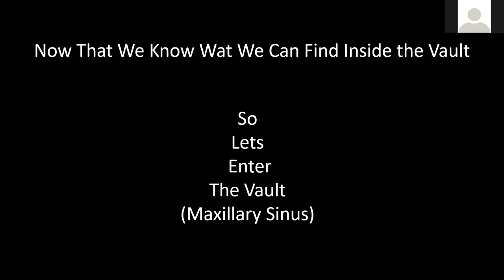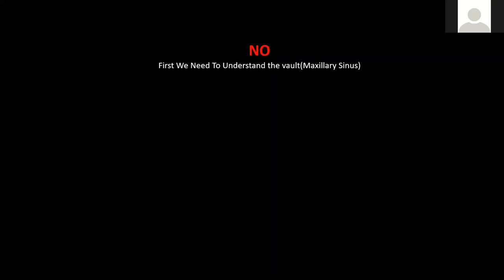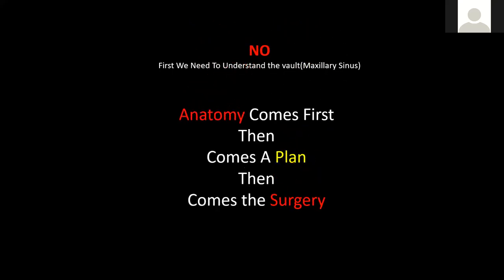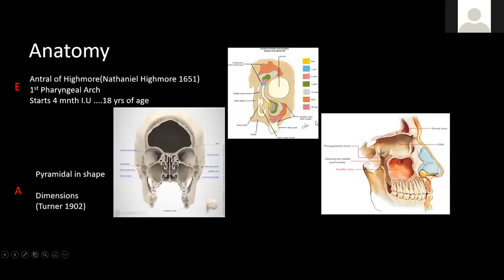Now that we know what can be found in the maxillary sinus, the question is: should we just go in and start treating it? No — first we need to understand that sinus, the vault we are dealing with. We need to understand the basic anatomy. As my father always says, there is no surgery without anatomy. First understand the anatomy of the surgical area, come up with a plan, and then follow with surgery: anatomy, surgical plan, then surgery.